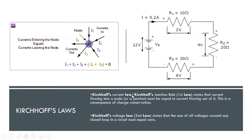The current law, or the first law, states that the total current entering the junction should be equal to the current leaving the junction. So if I1, I2, I3 are 2 ampere, 3 ampere, and 4 ampere, they add up to 9 ampere. The total current coming out should also be 9 ampere. If I5 is 8 ampere, then I4 would be 1 ampere.